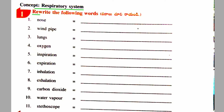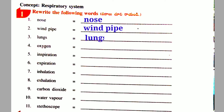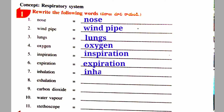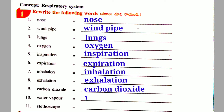First activity: Rewrite the following words. Nose, Windpipe, Lungs, Oxygen, Inspiration, Expiration, Inhalation, Exhalation, Carbon dioxide, Water Vapor, Stethoscope.